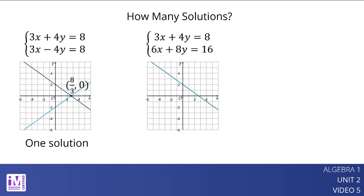The graphs of the equations in this system appear to be the same line. This suggests that every point on the line is a solution to both equations, or that the system has infinitely many solutions. How can we tell without graphing that this system indeed has many solutions? Notice that 3x plus 4y equals 8 and 6x plus 8y equals 16 are equivalent equations. Multiplying the first equation by 2 gives the second equation. This means that any solution to the first equation is a solution to the second.